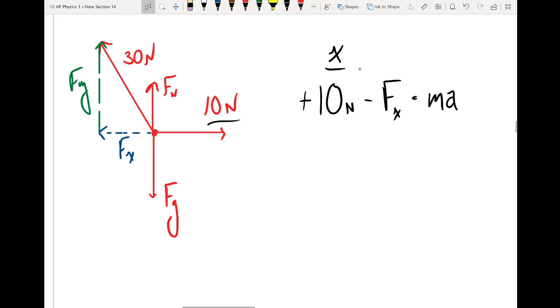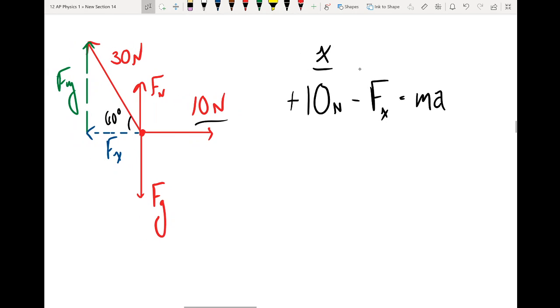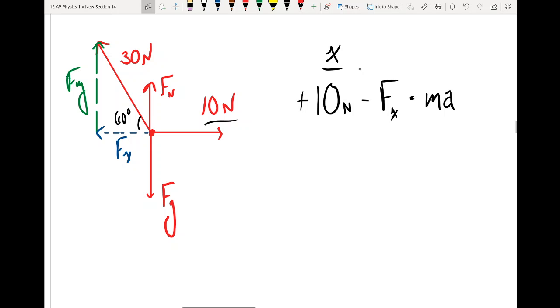So now what I can do, I can use some trig to kind of go a little bit deeper. So I can say, okay, if I'm looking at this triangle, 30 is my hypotenuse and this Fx, this is adjacent to my 60 degree angle. So it looks like I have adjacent and I have hypotenuse, which means I can use cosine.